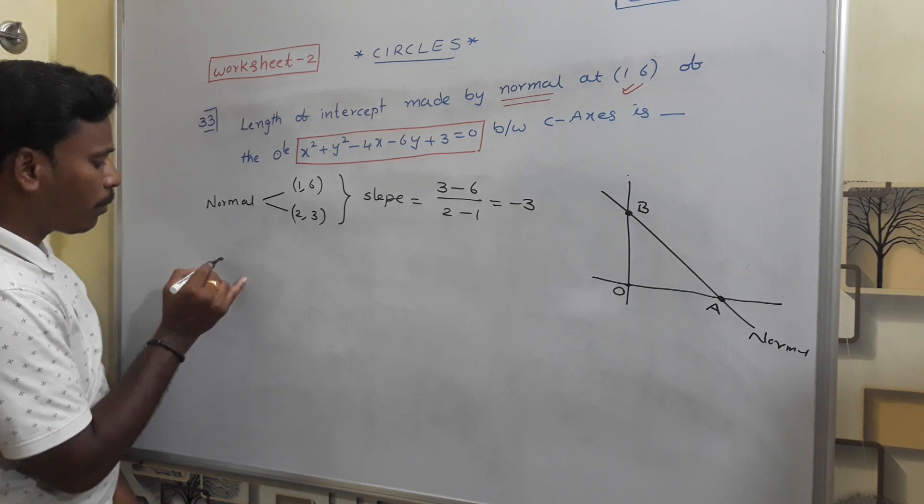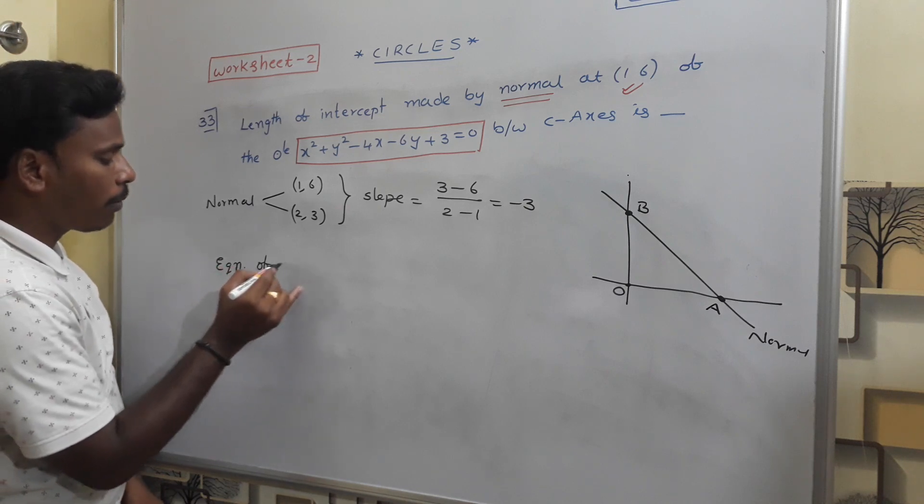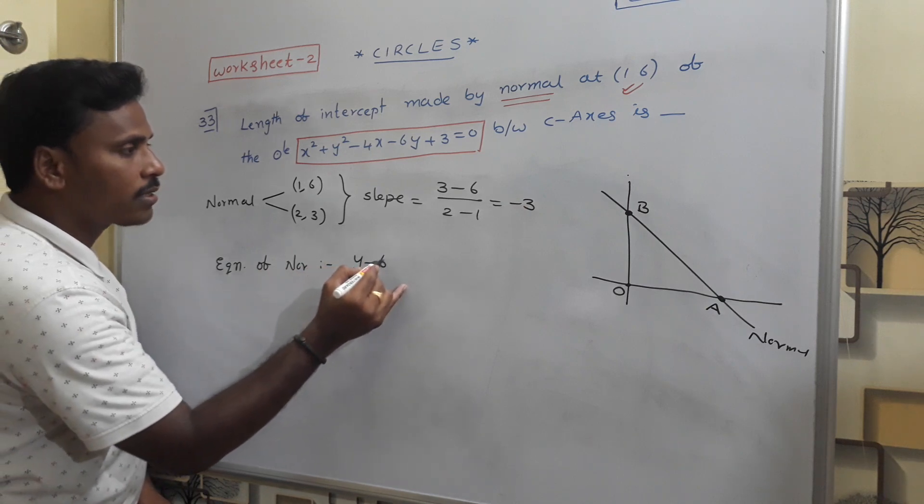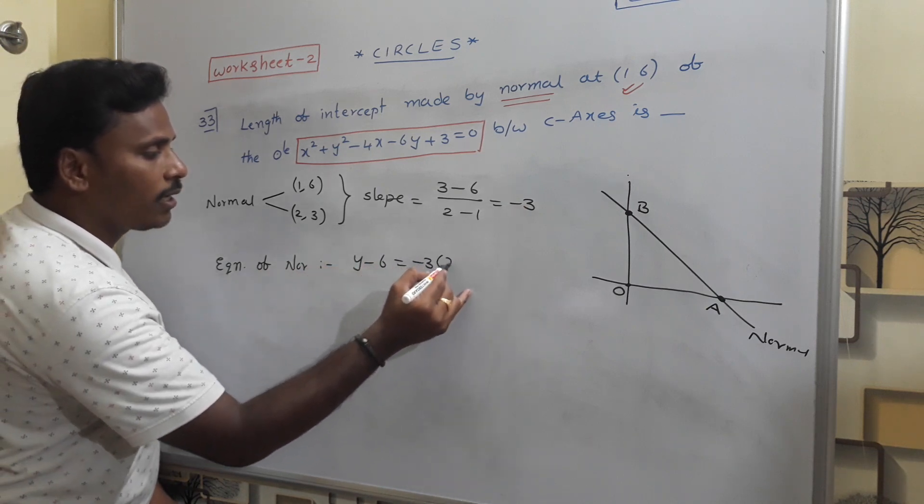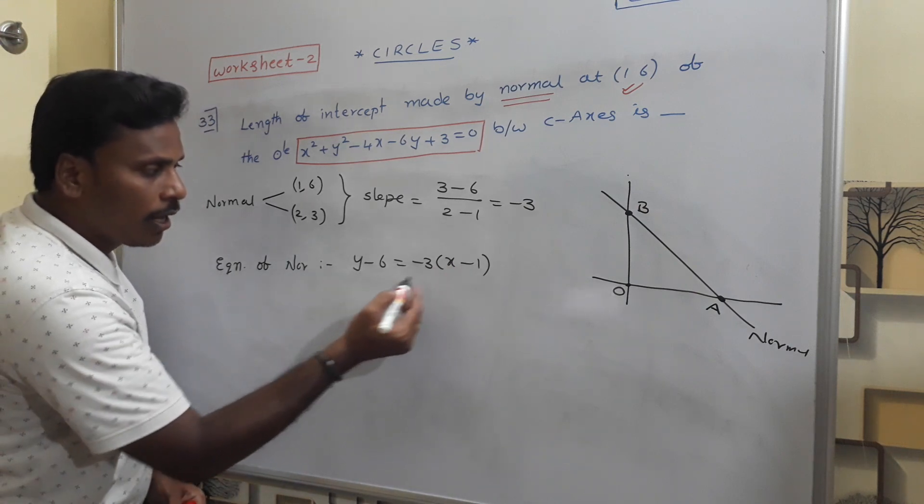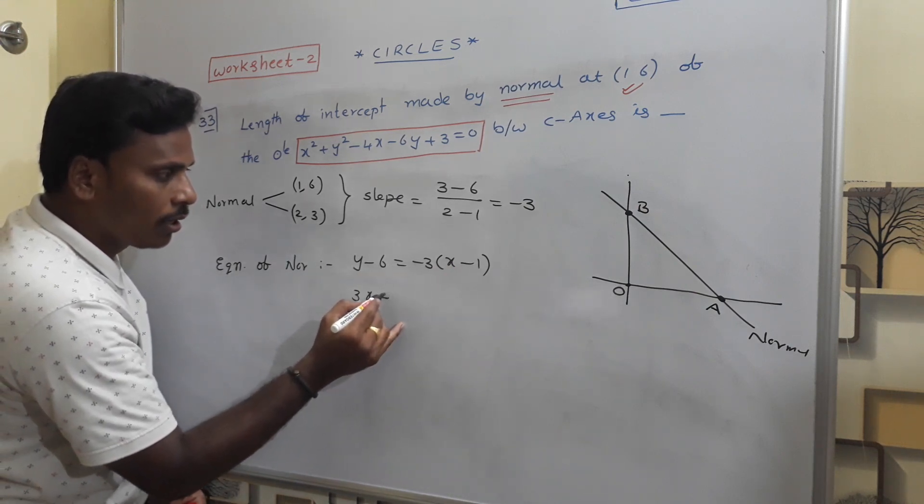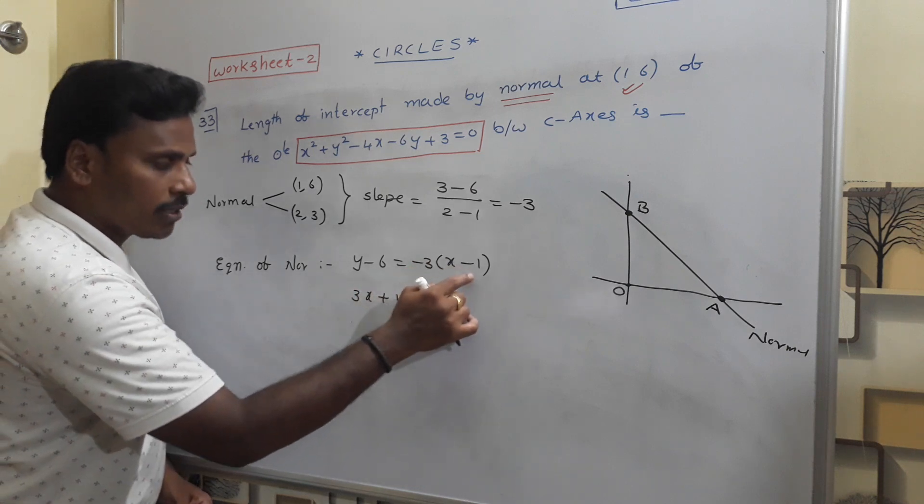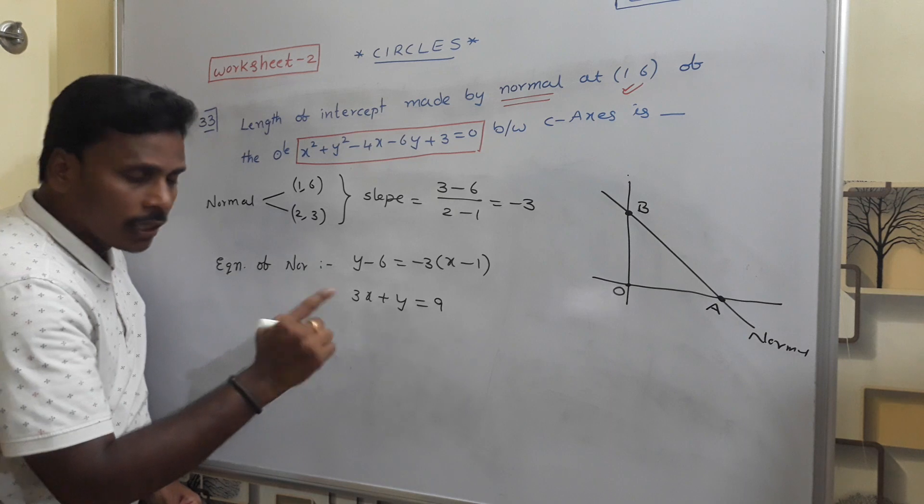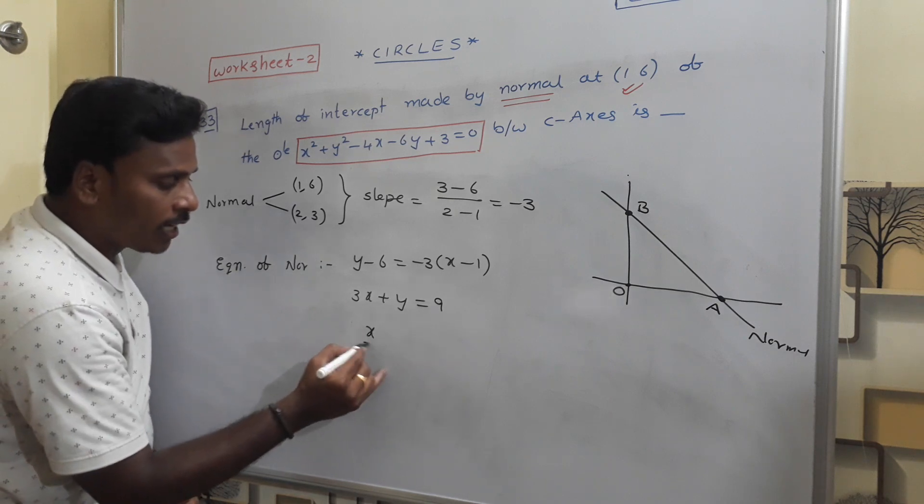So the equation of normal is: y - 6 = -3(x - 1). If you wish to simplify: -3x, it is just 3x + y, and that is +3. 6 + 3 = 9.